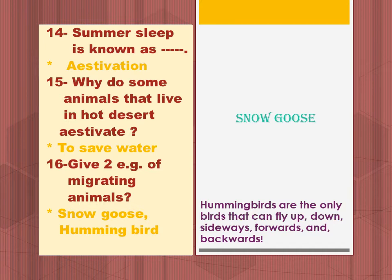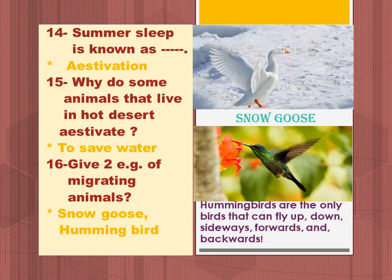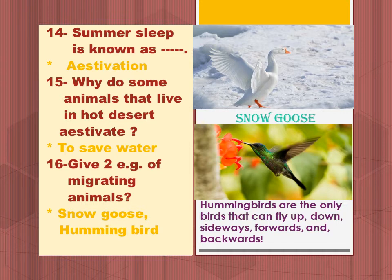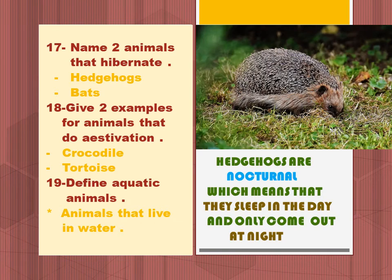Why do some animals that live in hot deserts estivate? To save water. Give two examples of migrating animals: snow goose and hummingbird. Name two animals that hibernate: hedgehogs and bats. Give two examples of animals that do estivation: crocodile and tortoise.